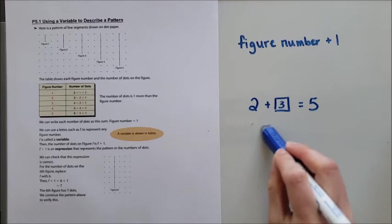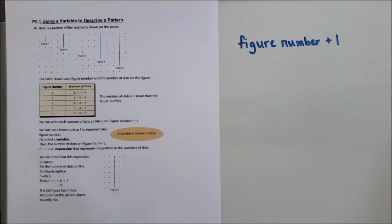So in this example I might use the letter F to represent my figure number. So I could write this as F plus one. And so whatever my figure number is I'm going to add one and that's how many dots would be in my figure.